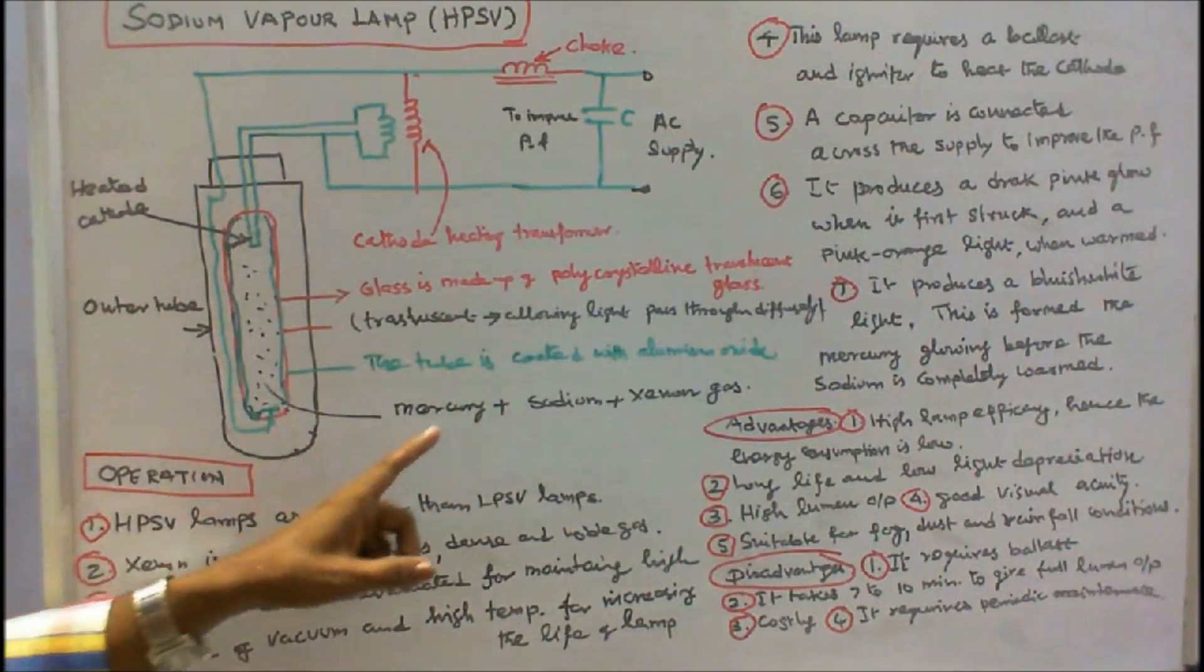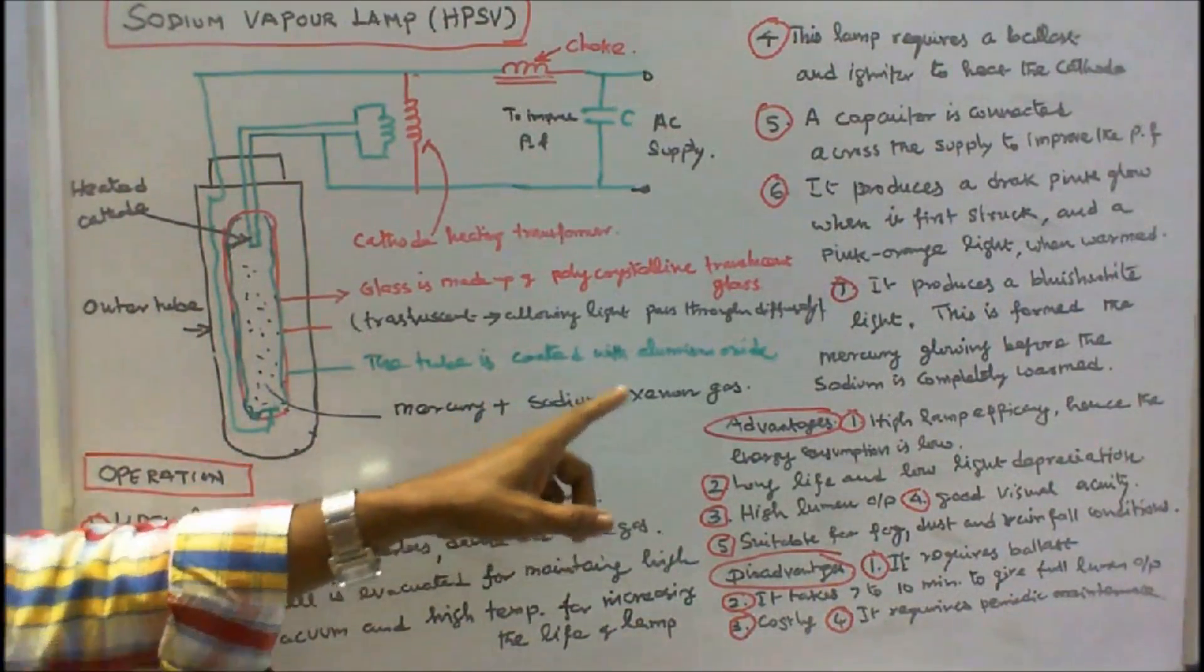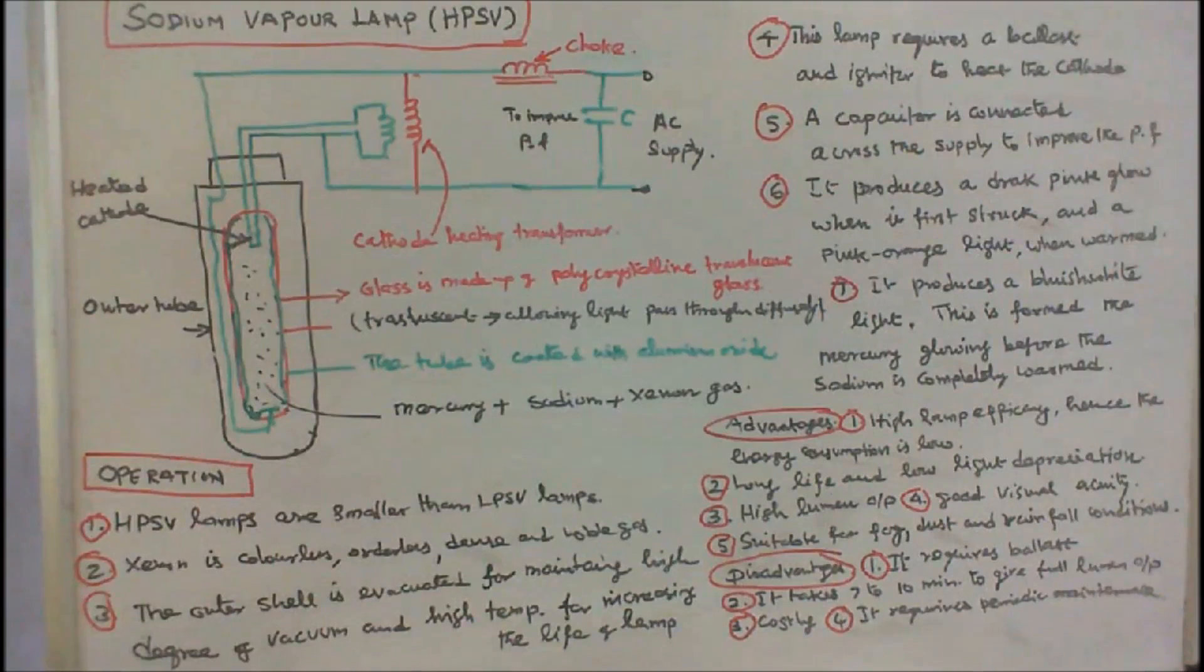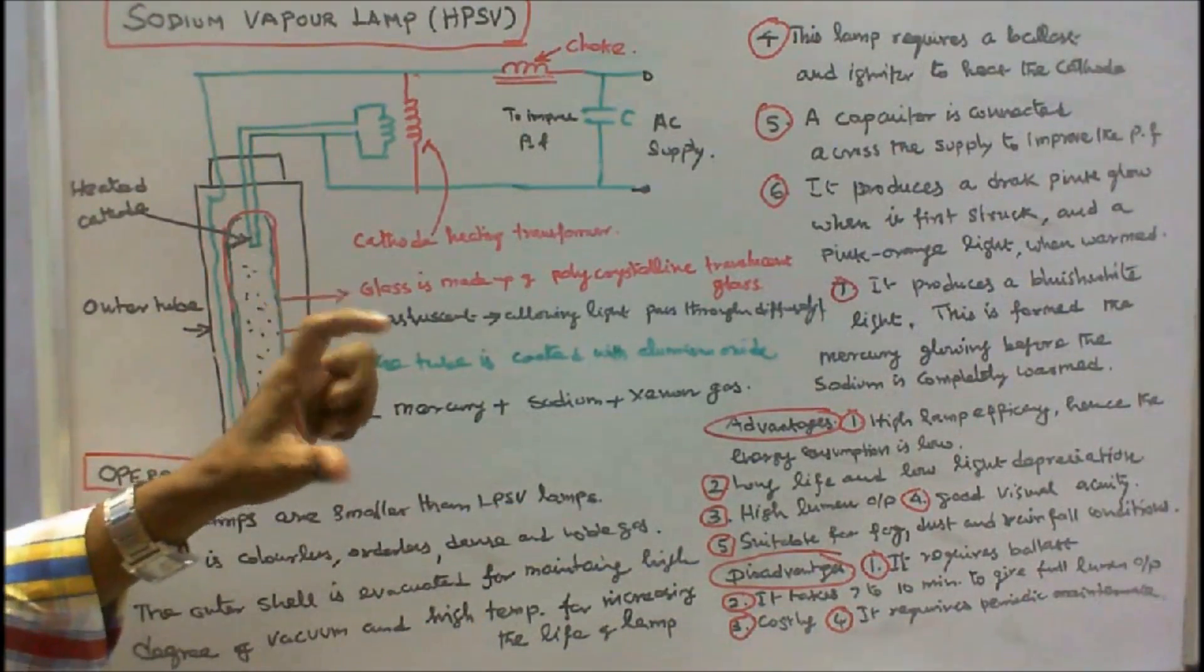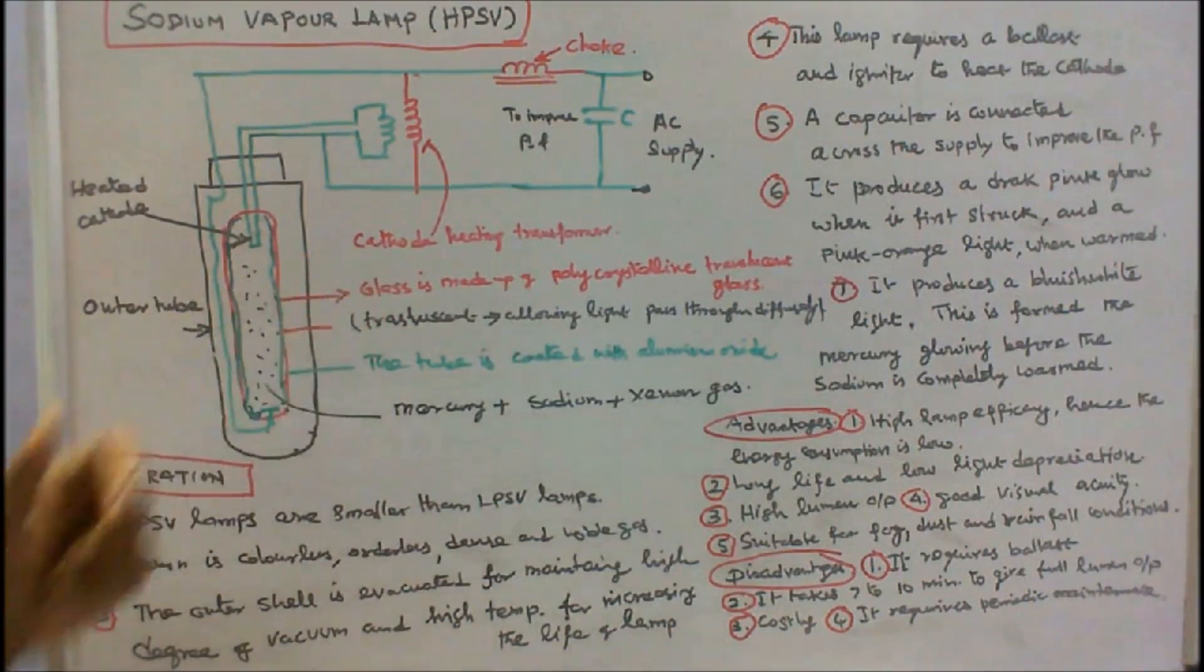Inside the tube, mercury plus sodium plus xenon gas is present. High pressure sodium vapor lamps are smaller than low pressure sodium vapor lamps. Its size is very small compared to low pressure sodium vapor lamp.